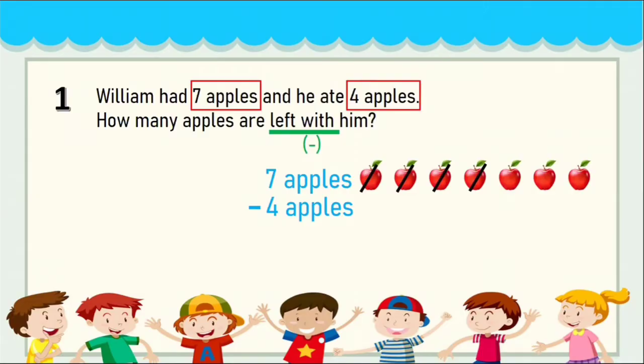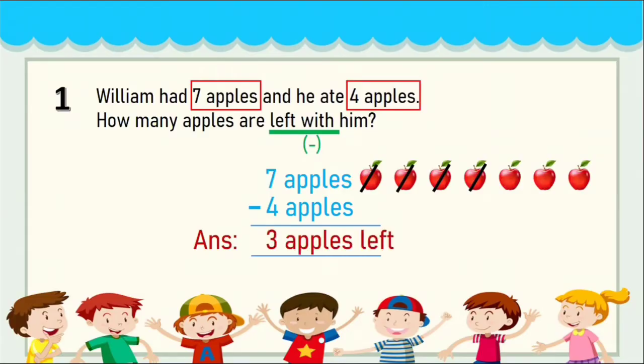Now count how many apples are left: one, two, three. So you subtract four from seven and you get three. Three apples are left.